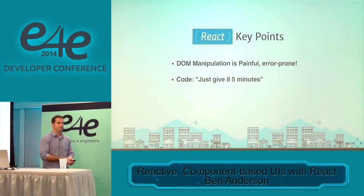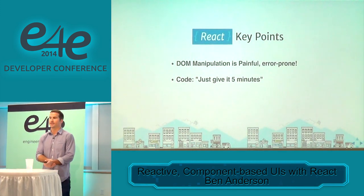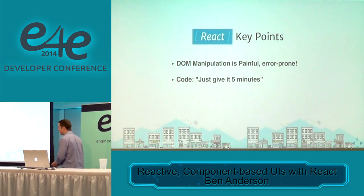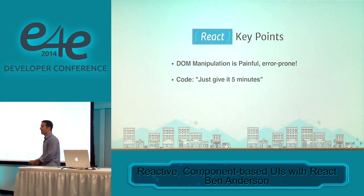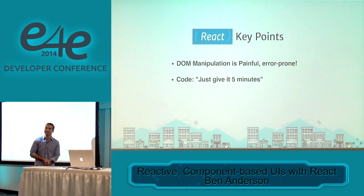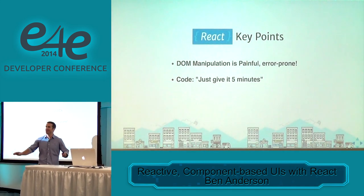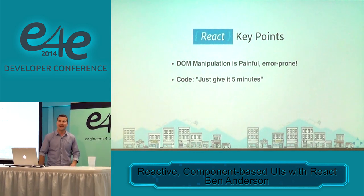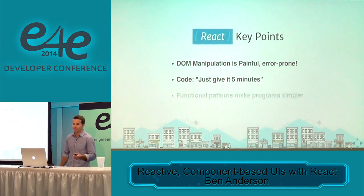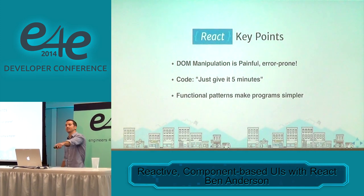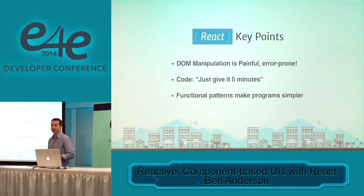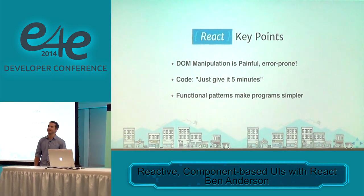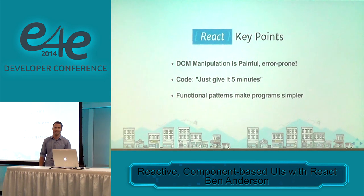They borrowed this idea from 37 Signals — it's called Just Give It Five Minutes. We're going to look at the code. Some of it might not look super familiar if you're used to programming in a different way, but I promise it'll only take five minutes, so don't freak out. We're so used to doing the TodoMVC sort of evaluation where you look at it for 10 seconds and immediately dismiss things. But it exposes patterns that make our programs simpler, and giving something five minutes to get that benefit is a pretty good win.